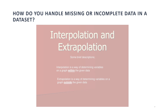Interpolation is a way of determining variables on a graph within the given data, and extrapolation is a way of determining variables on a graph outside the given data.